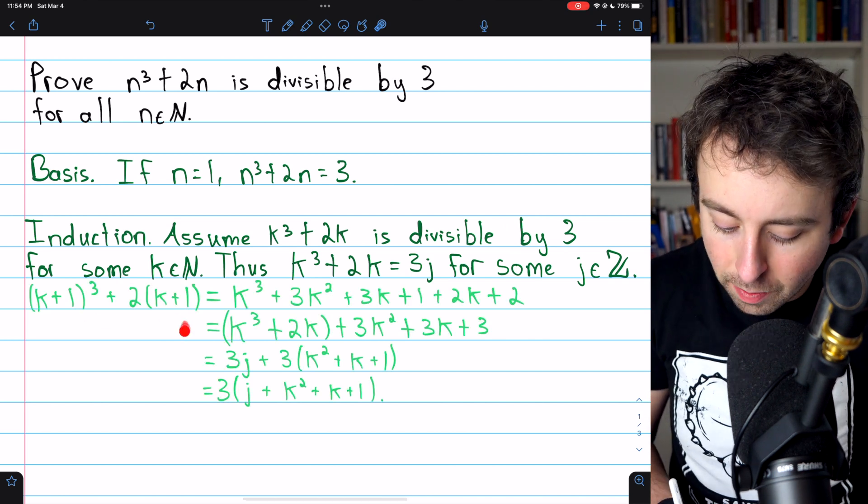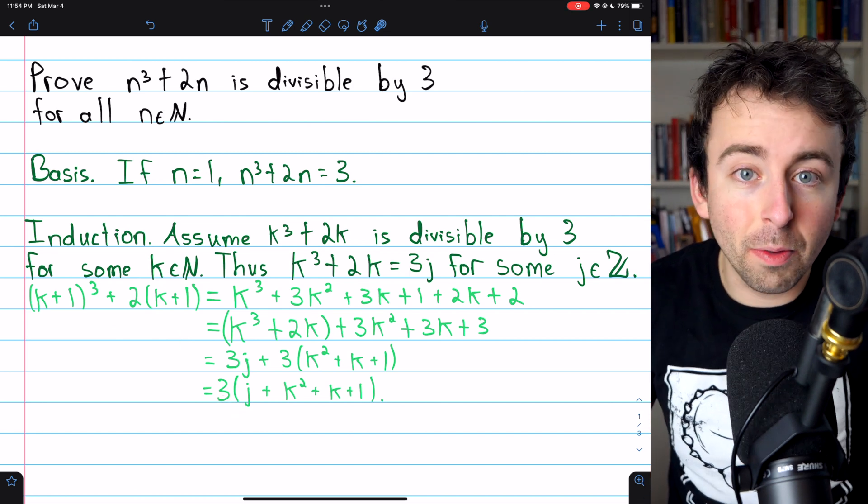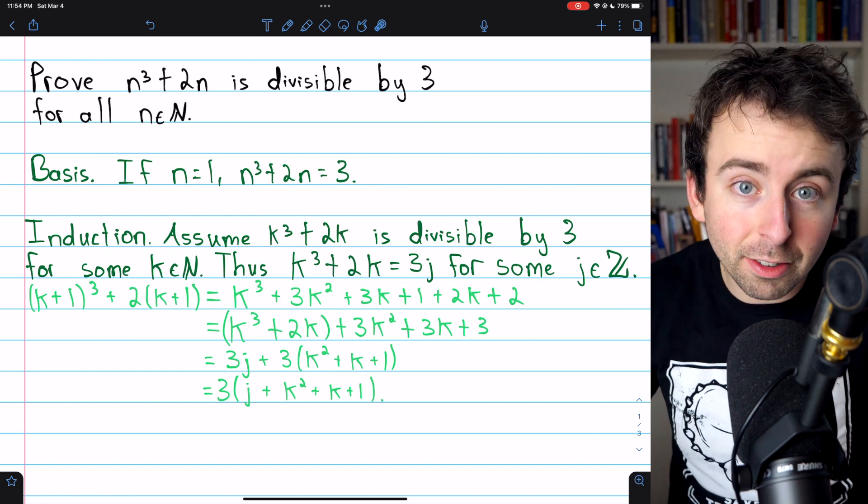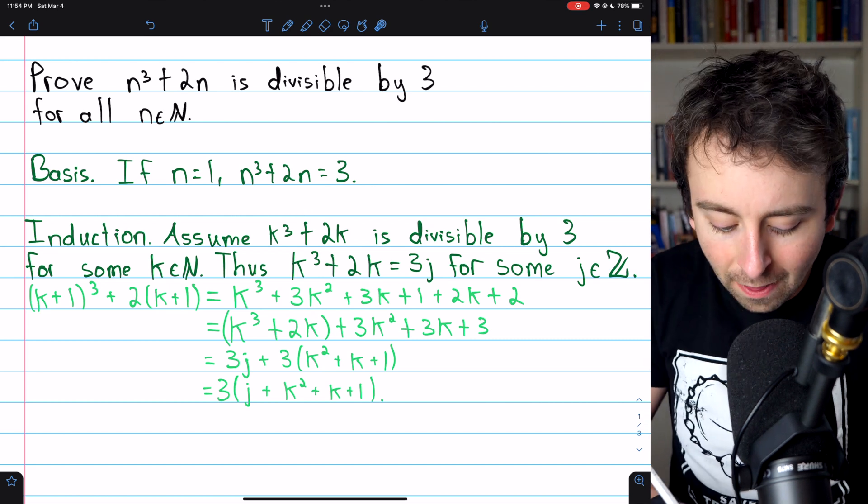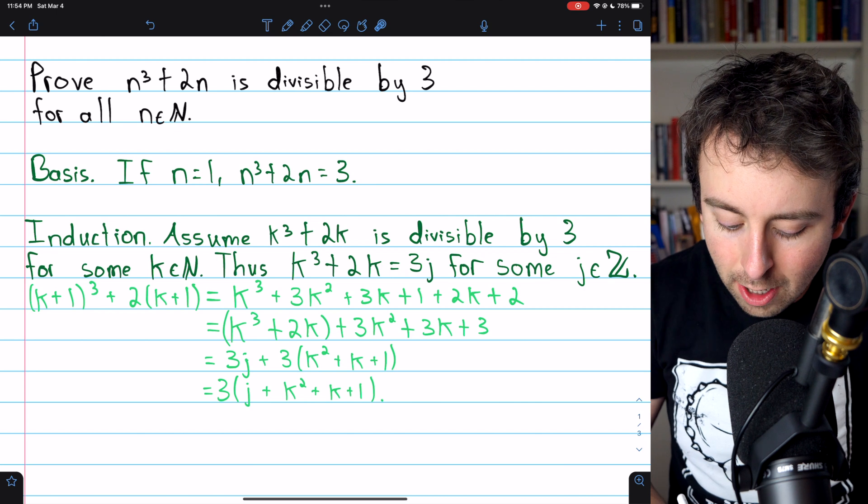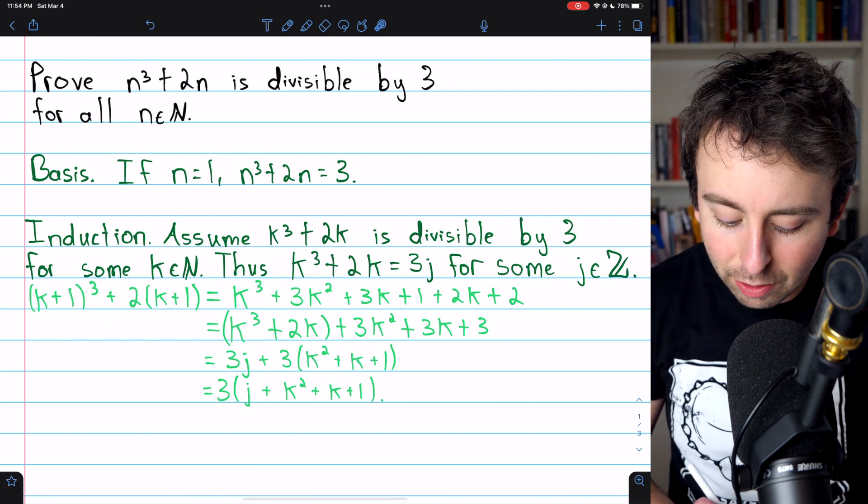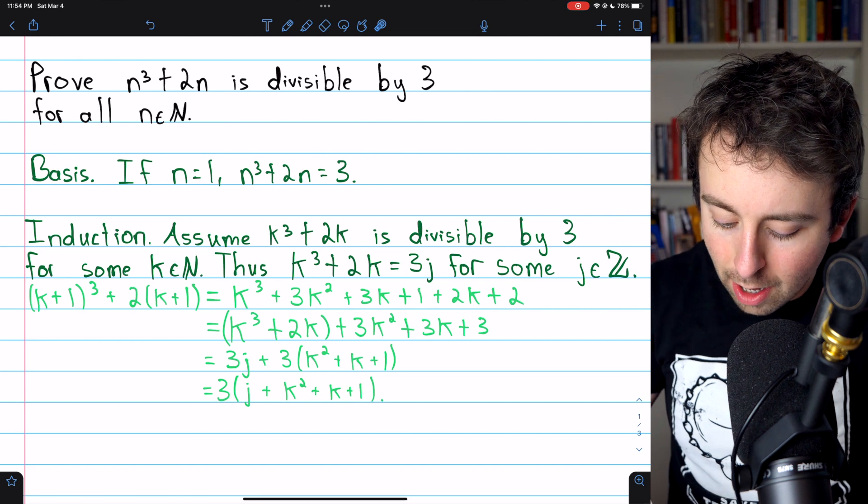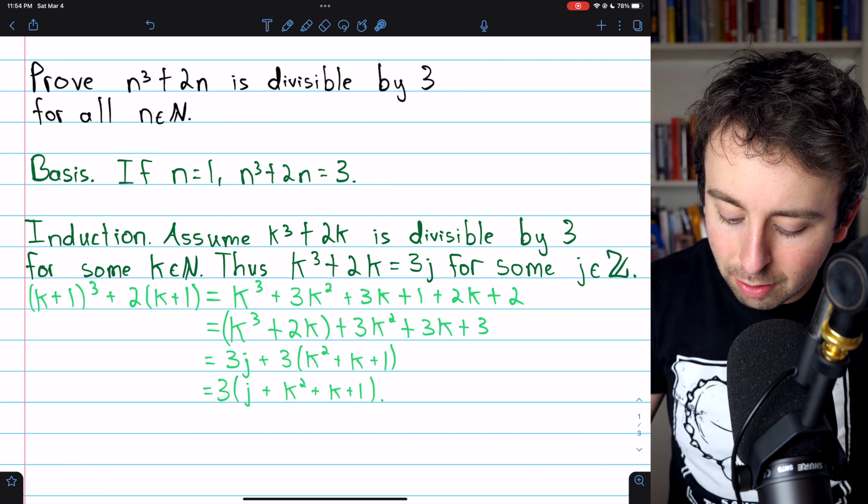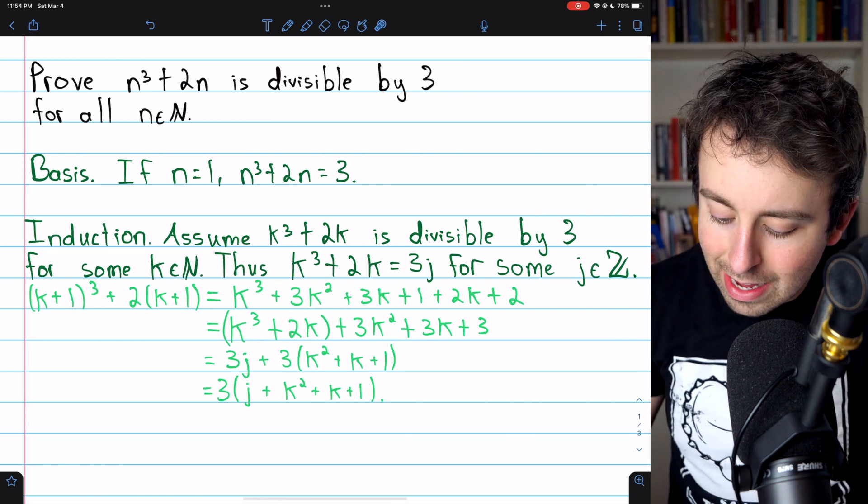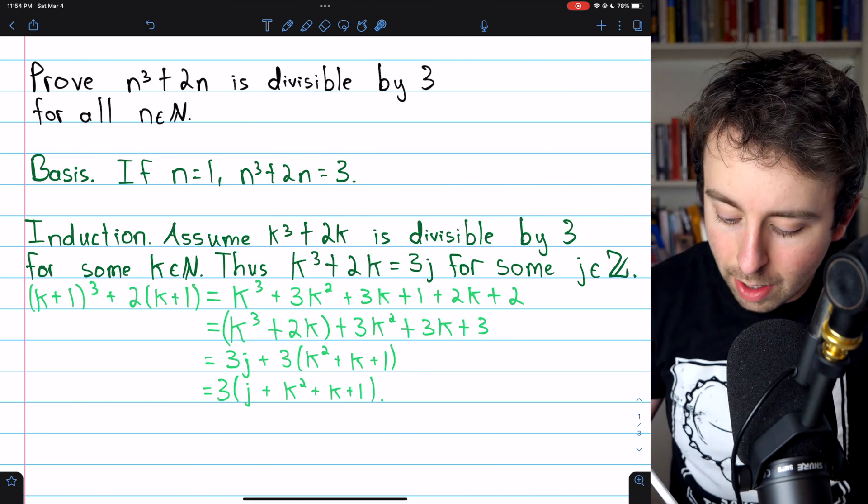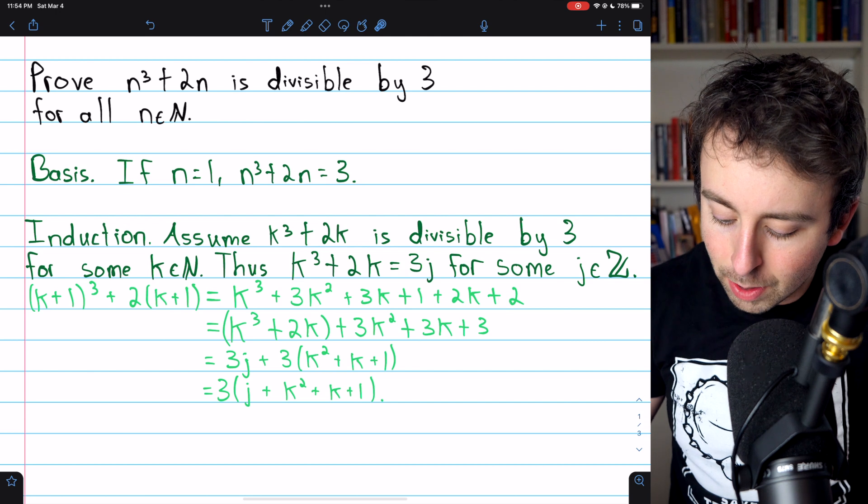Let's write that expression out and try to do some work with it. Here is all of the algebra. It actually turns out to be pretty straightforward. We're looking at k cubed plus 2k, but for the next positive integer, k plus 1. So k plus 1 cubed plus 2 times k plus 1. If we expand this all out, k plus 1 cubed becomes k cubed plus 3k squared plus 3k plus 1. And 2 times k plus 1 is just 2k plus 2.